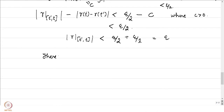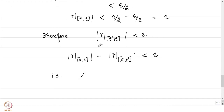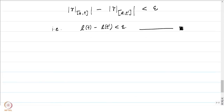Therefore the arc length of gamma restricted to [t', t] is less than epsilon whenever t' is in the delta-neighborhood to the left of t. This is exactly equal to the arc length of gamma restricted to [a, t] minus the arc length of gamma restricted to [a, t'], which follows by the first problem. This is precisely L(t) - L(t') < epsilon, which establishes that the function L is a continuous function.